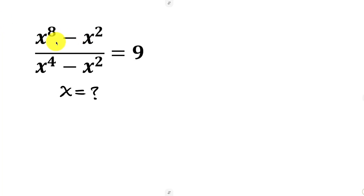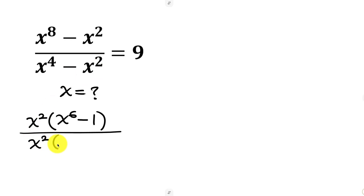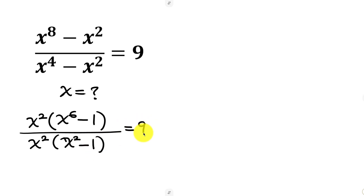Our first step is to factor out x squared from the numerator since it is common. So we factor out x squared. Now open brackets: x to the power of 8 divided by x squared is x to the power of 6, minus x squared divided by x squared is 1, all over. The denominator x squared is also common so we factor out x squared — open brackets x to the power of 4 divided by x squared is x squared, and minus x squared divided by x squared is 1 — and this is equal to 9.